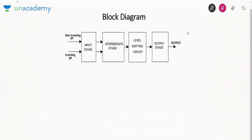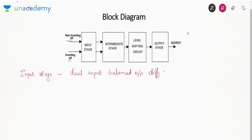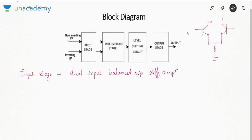Looking at the block diagram of an op-amp: it has two inputs — non-inverting and inverting. The first input stage is a differential amplifier of the dual input, balanced output type. In a balanced output differential amplifier, the output is taken from both collector terminals. If only one output terminal is used, it is called unbalanced output; if both output terminals are used, it is called balanced output.